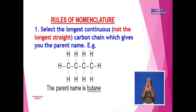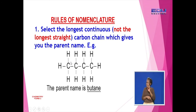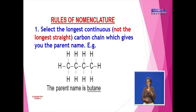We start by looking at the rules of nomenclature, beginning with the first rule. The first rule of nomenclature states that you select the longest continuous carbon chain, as shown on the screen. This carbon chain has four carbon atoms — one, two, three, four. Therefore, we call this compound butane, because the longest continuous carbon chain has four carbon atoms.